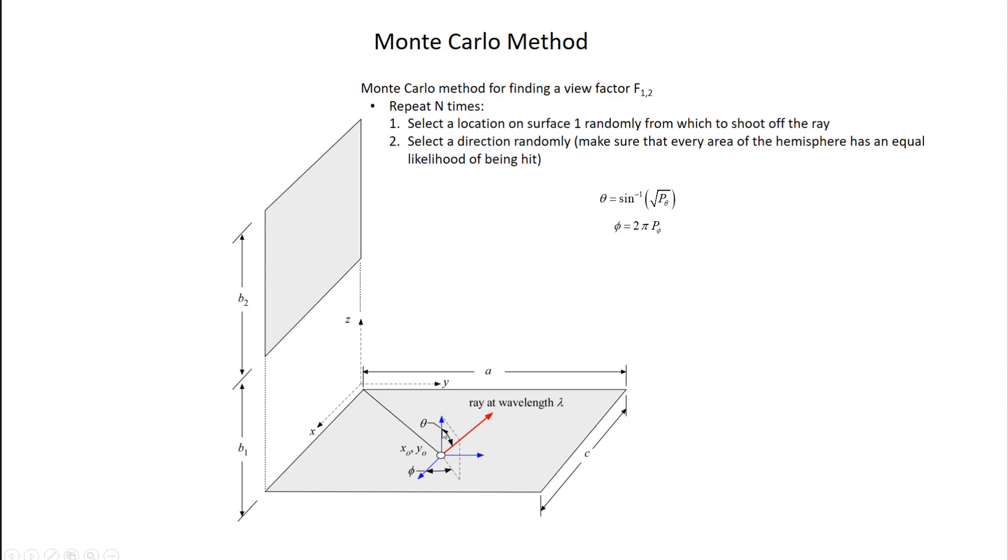And the reason is because I need to have an equal probability of hitting every area of the hemisphere that's placed over this origin. So if I uniformly choose an angle theta between 0 and 90 degrees, I'm doing kind of the same thing I just described before, which is I'm concentrating my rays artificially towards the top of this hemisphere, and I'm going to have a very sparse distribution of rays down here towards the bottom of the hemisphere where the area is bigger.